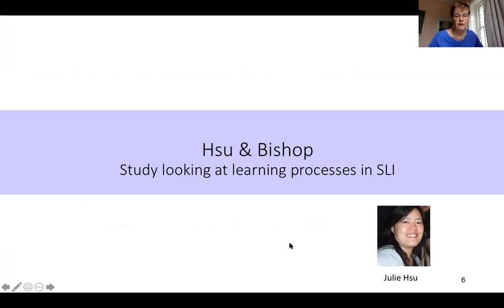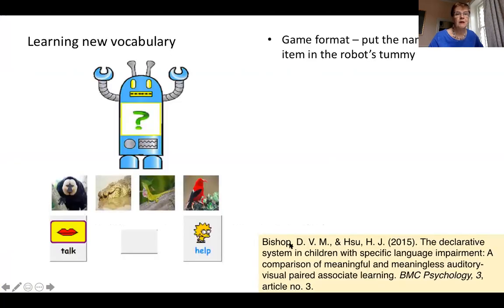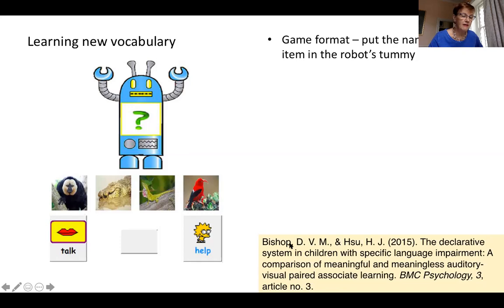I was very fortunate that Julie Hsu came as a postdoc from Taiwan to work with me on this and put a huge amount of effort into making it work. We still weren't online at this point. I devised a task where you learned new vocabulary, very similar to the earlier one done with Stuart Rosen. They had a number of trials where novel animals — whose names they didn't know — were presented, and they would hear a name and have to put the right animal in that robot's tummy, getting exciting rewards when it worked.